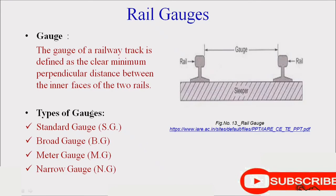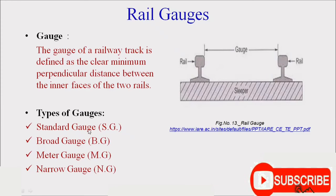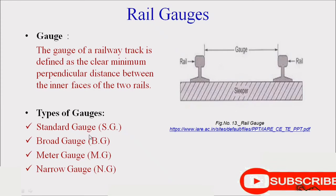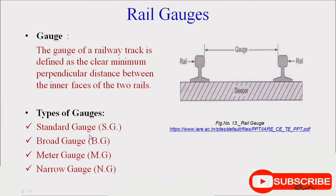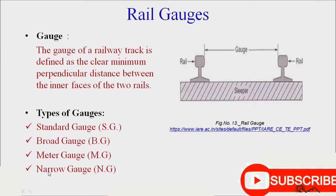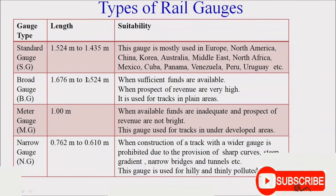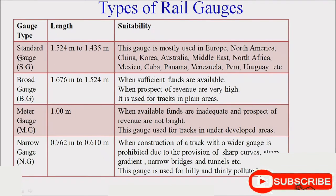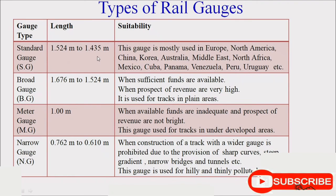There are various types of rail gauges: standard gauge, broad gauge, meter gauge, and narrow gauge. In India, broad gauge, meter gauge, and narrow gauge are normally used. Standard gauge has a length of 1.435 m to 1.524 m and is mostly used in Europe, North America, China, Korea, and Australia.